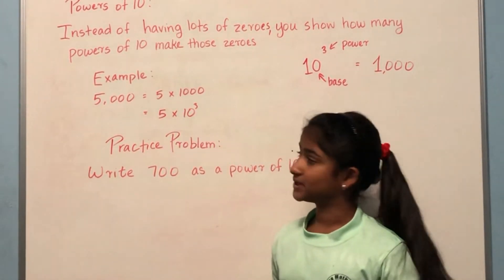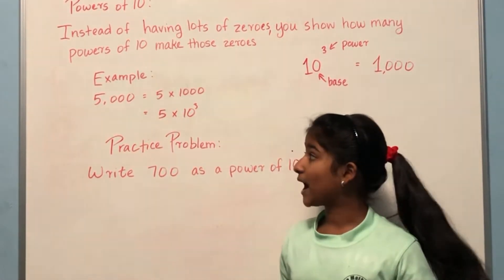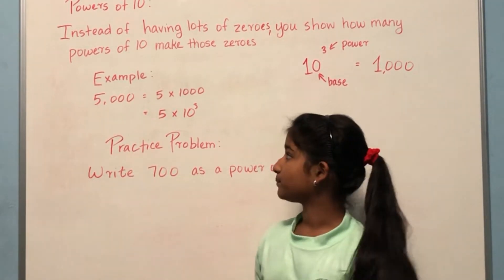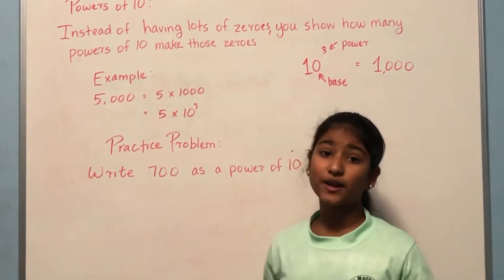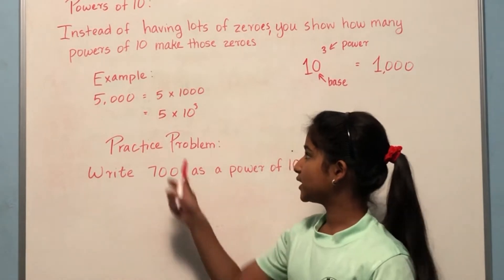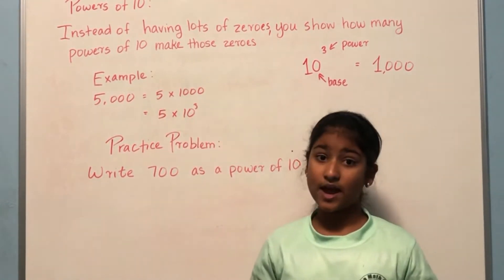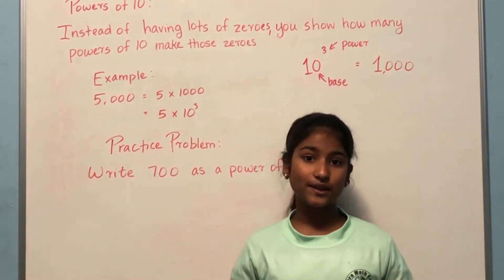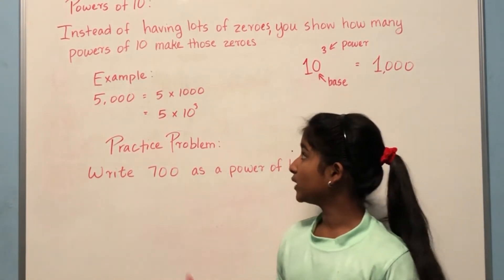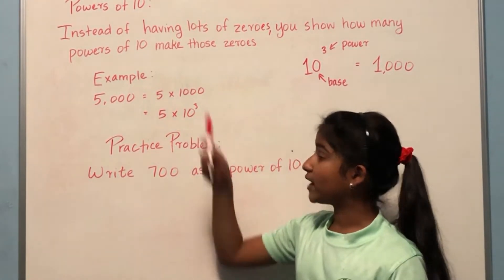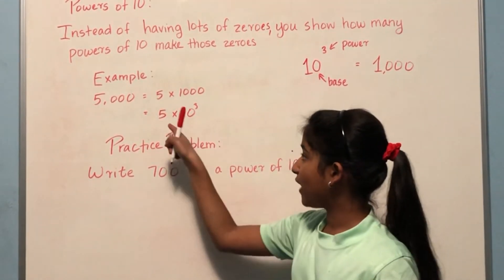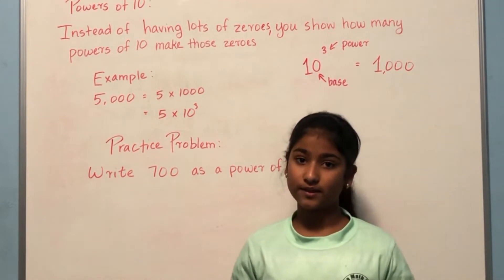Now let's do an example together. We have to write five thousand as a power of ten. We know that five thousand broken up is equal to five times a thousand. Previously we learned that ten to the power of three is a thousand, so we need to convert a thousand to a power of ten. That gives us five times ten to the power of three.